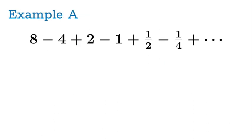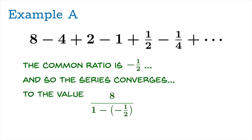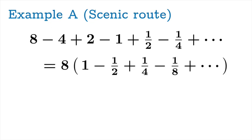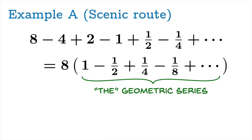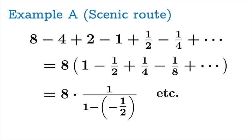Let's take a look at a couple of examples. Here's a series — you look at it for a moment and realize it's geometric, and the common ratio is actually equal to negative 1 half. Negative 1 half is strictly between negative 1 and 1, so the series converges. Using our formula — first term divided by 1 minus the common ratio — we multiply top and bottom by 2 and simplify, and this series converges to the value 16 thirds. There's also a scenic route I'm quite partial to: factor out the first term and recognize what's left as the geometric series with first term 1, giving you a times 1 over 1 minus negative 1 half, which of course gives the same result.